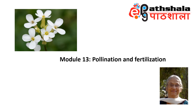Both processes are important for the success of sexual reproduction. After fertilization, the ovary develops into a fruit, which is an important agency for seed dispersal. In this module, we shall study the processes of pollination, fertilization and fruit formation mainly in the context of Arabidopsis.